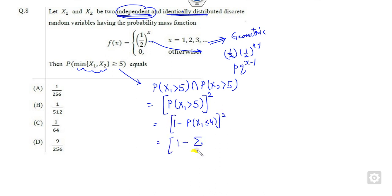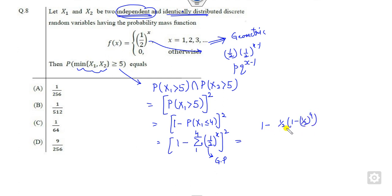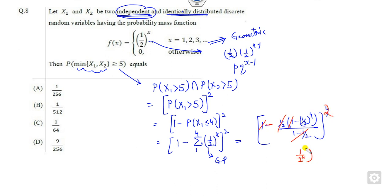Now you can write this as a discrete sum from 1 to 4 of one half raised to power x. What is that? This is nothing but a geometric progression. You can solve it using a times 1 minus r raised to power n upon 1 minus r. That gives 4 upon 1 minus r. You can see this is one half, and terms cancel out, giving 1 by 2 raised to power 4, squared. So 1 by 2 raised to power 4 is 1 by 16, and 1 by 16 squared is 1 by 256, which is the right answer.